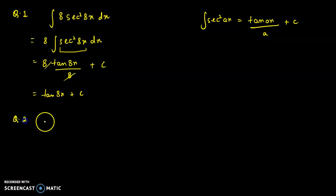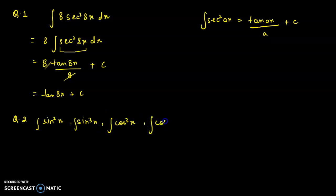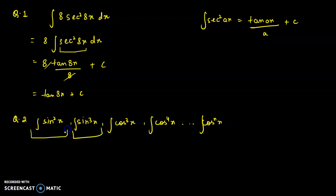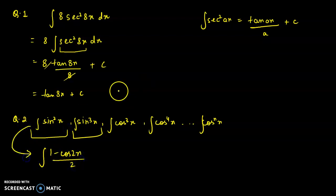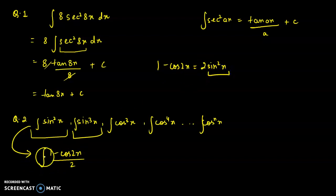Questions can also involve sin²x, sin³x, cos³x, or cos⁴x. When such questions appear, here's how to handle them. For sin²x, the substitution is (1 − cos 2x)/2, because 1 − cos 2x = 2 sin²x. So sin²x = (1 − cos 2x)/2. When you integrate this, you will get the answer.